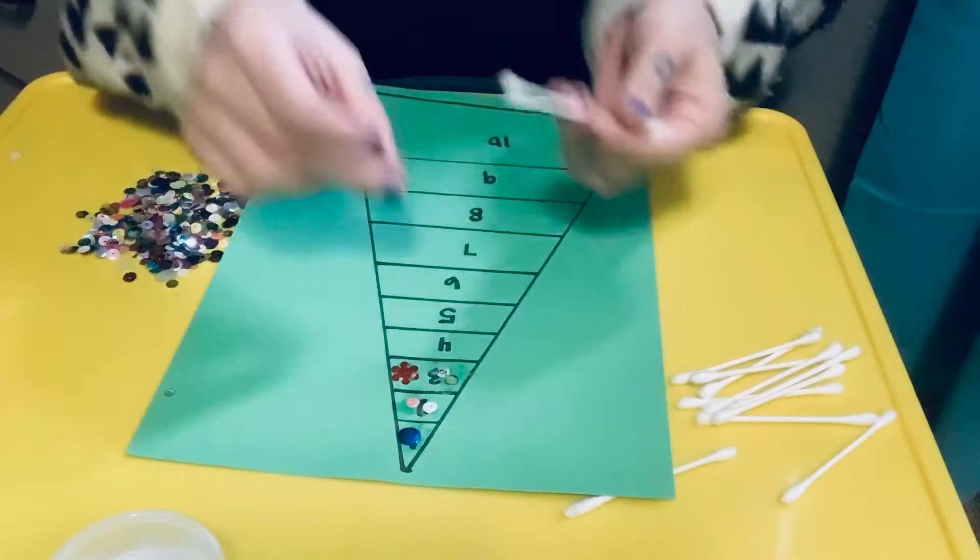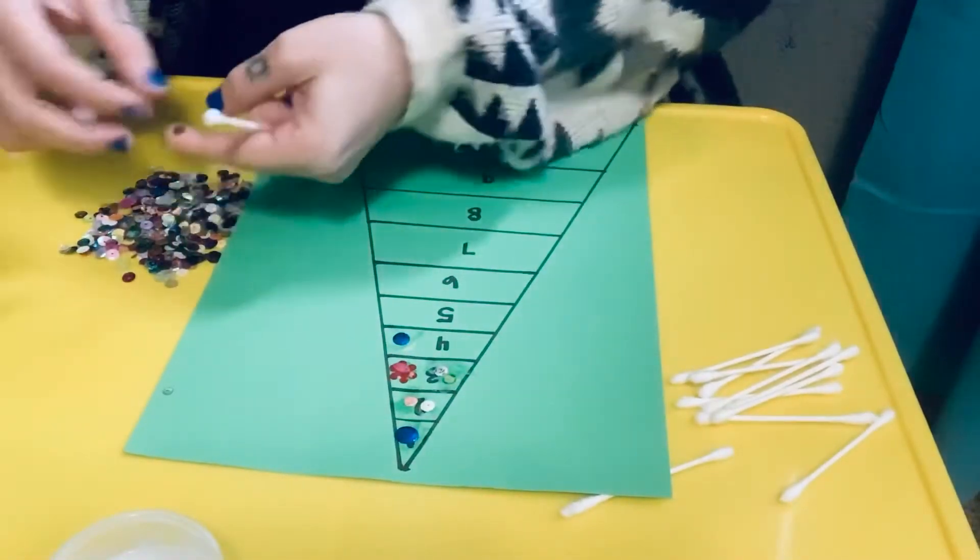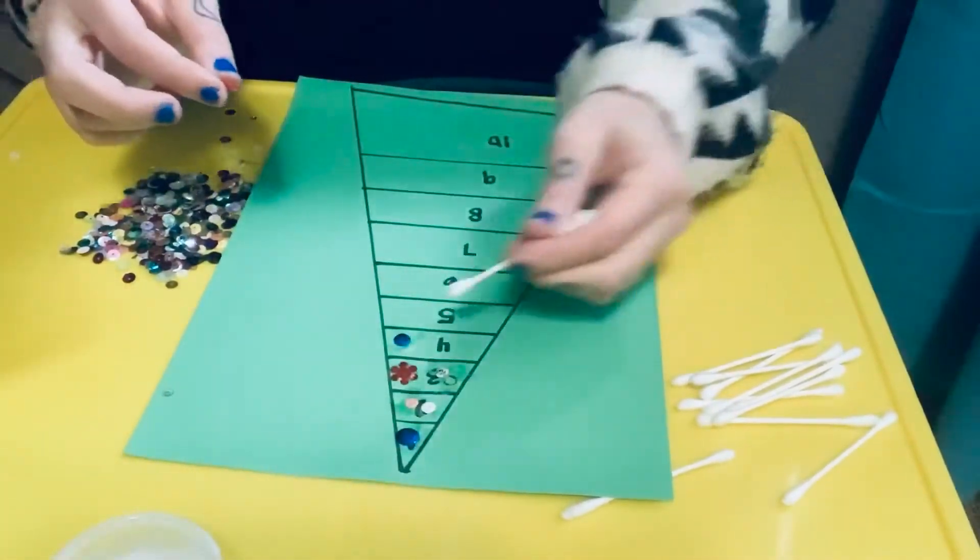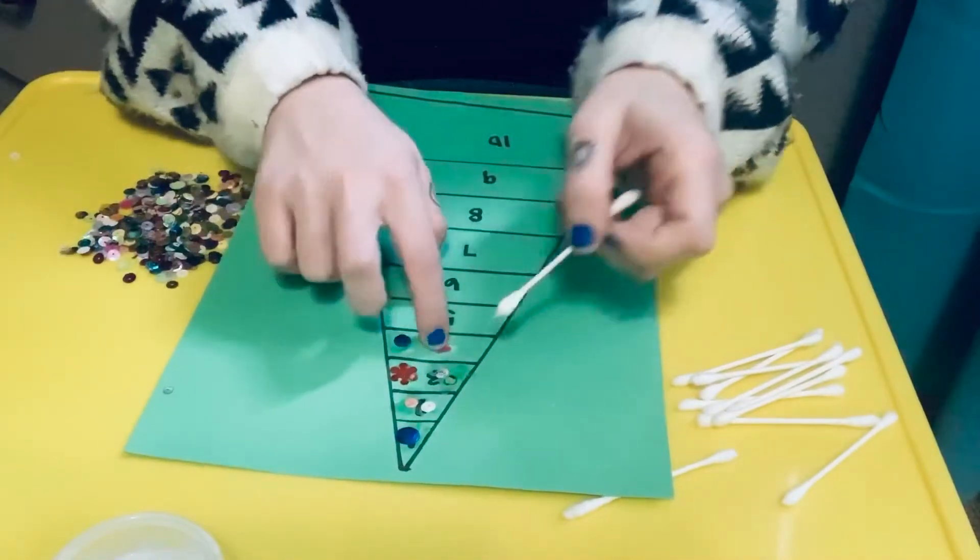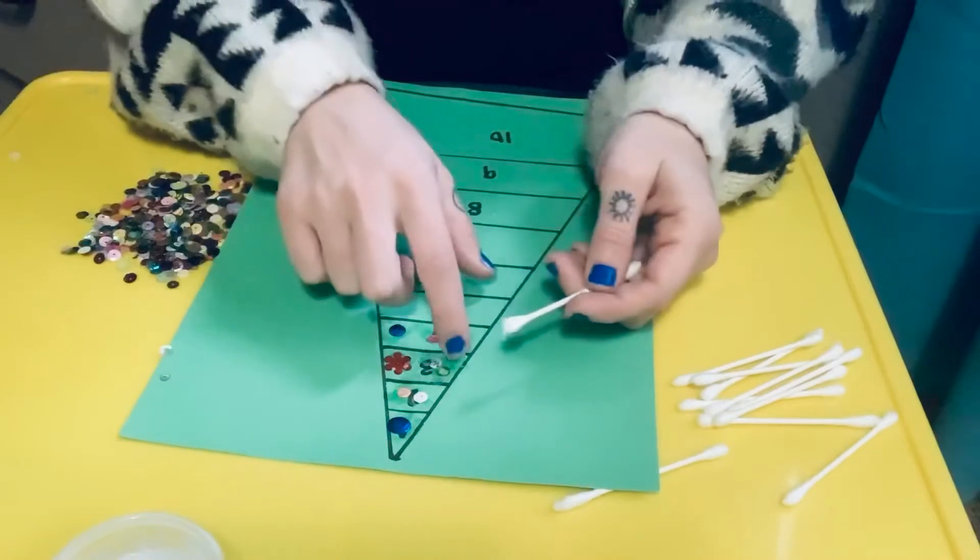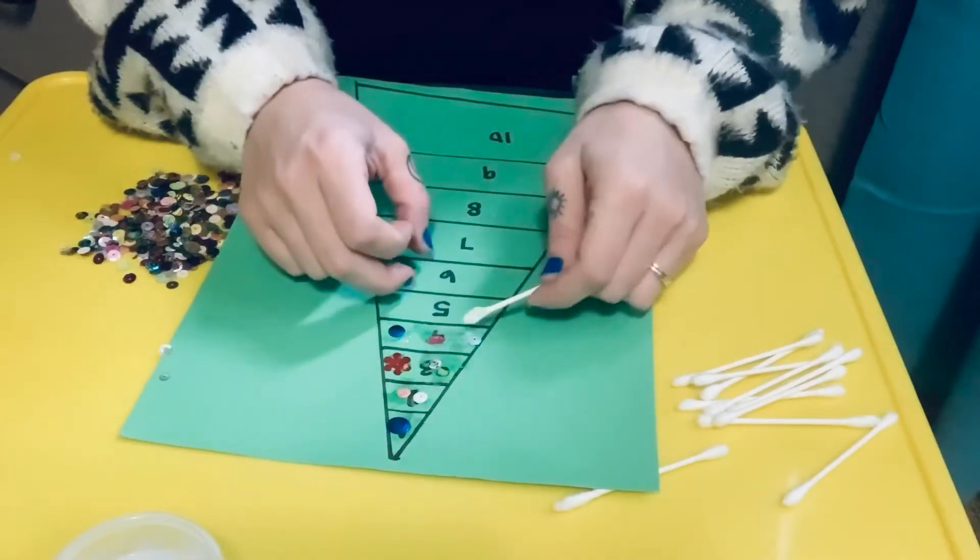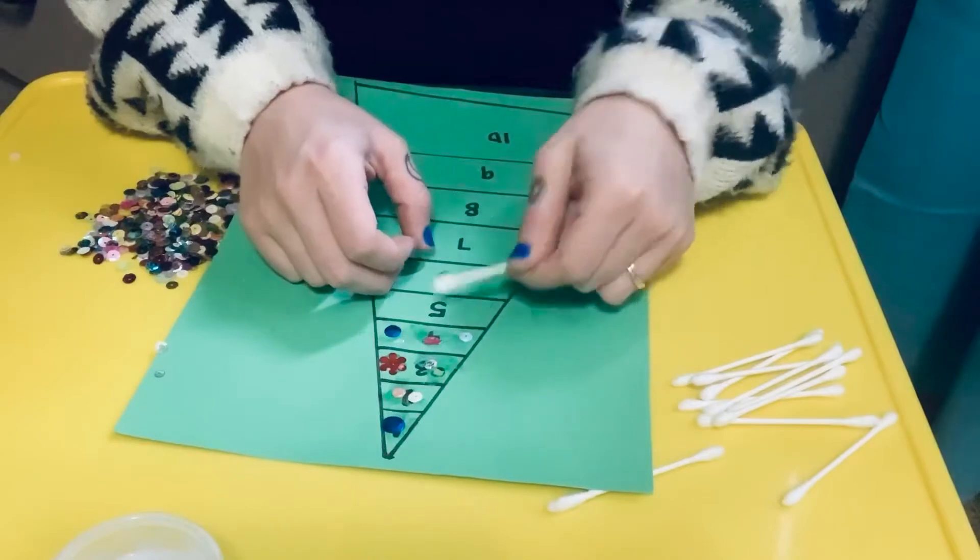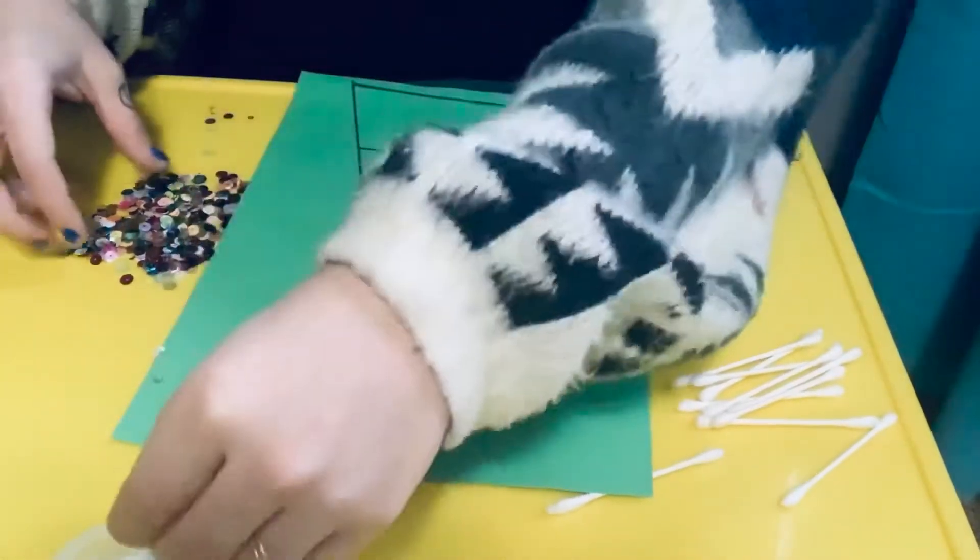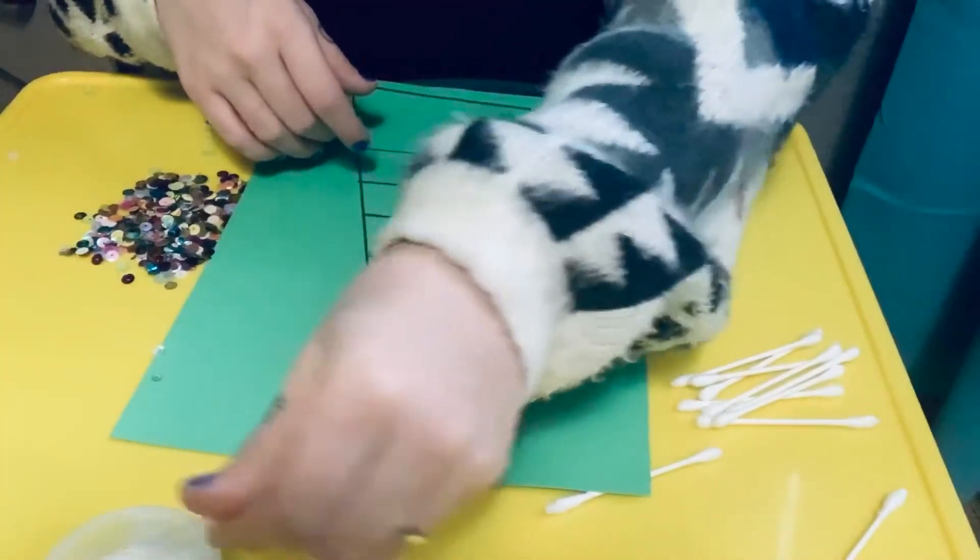So I'm just gonna pick out four sequins for this spot. Sometimes it's easier if I add glue to the paper and the sequin. Add a little bit there. One, two, three, four. Okay. Now I think I'm gonna switch up my q-tip, almost getting a little crazy.